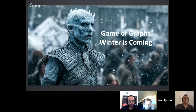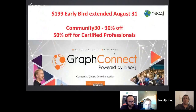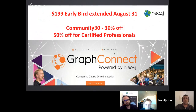I'm really excited about this. I've been reading the books for many years, I think 15 years or so, since the first came out. And I was also really excited when the TV series came out. Before we start with the meetup, just a quick reminder: we have GraphConnect in October in New York. The early bird was extended till August 31st. You can use the community30 discount code to get 30% off, even off the early bird. And if you're a certified professional for Neo4j, you can get 50% off.